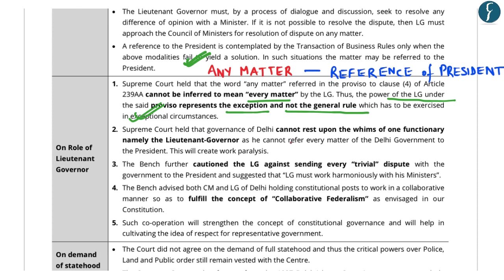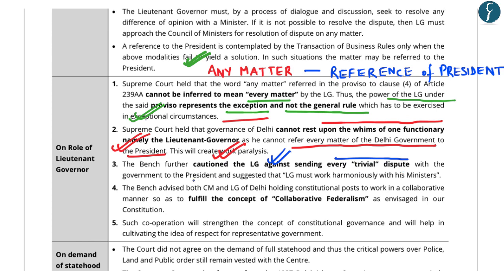The Supreme Court held that the LG has no independent decision-making power and cannot refer every matter to the president, as this would choke the day-to-day administration of Delhi. The governance of Delhi cannot rest upon the whims of one functionary, namely the lieutenant governor. The Supreme Court cautioned the LG against sending every trivial dispute to the president and suggested the LG must work harmoniously with ministers. The Supreme Court advised both the chief minister and LG to work in a collaborative manner to fulfill the concept of collaborative federalism.